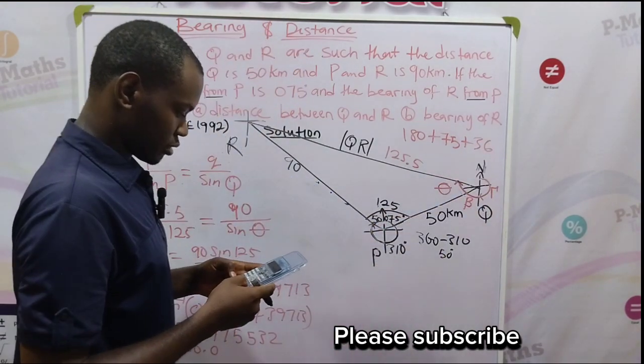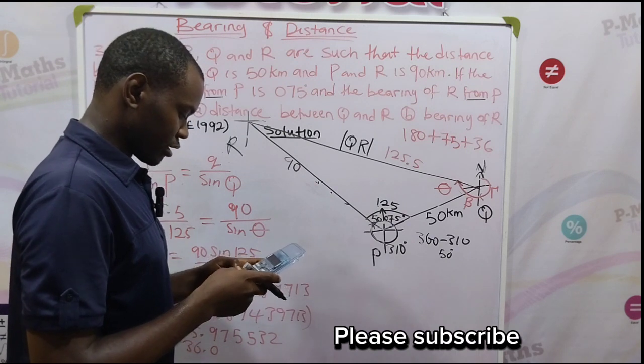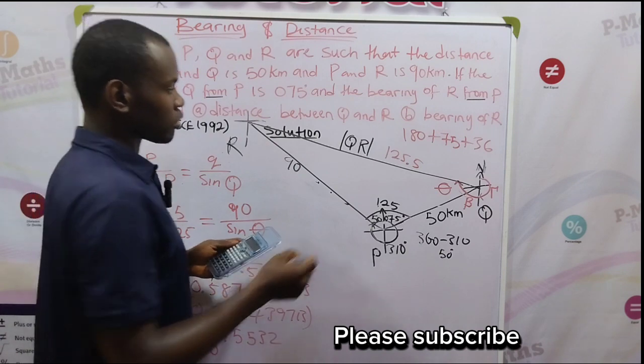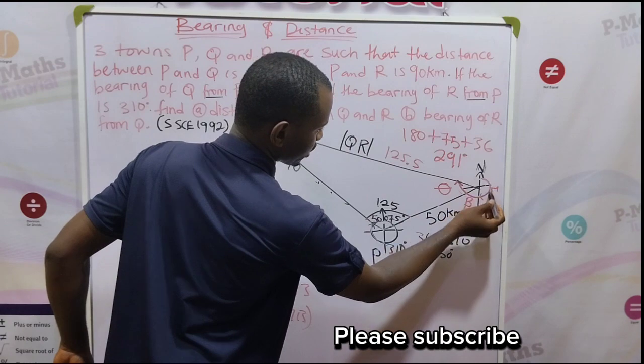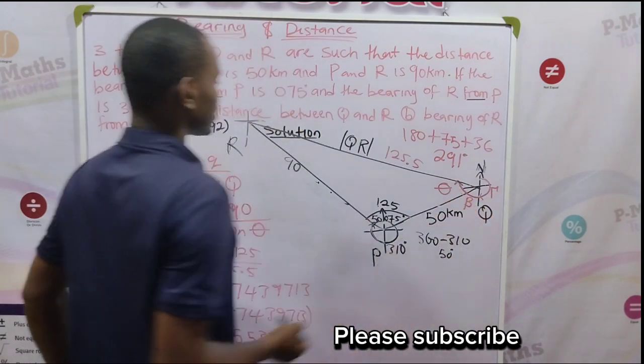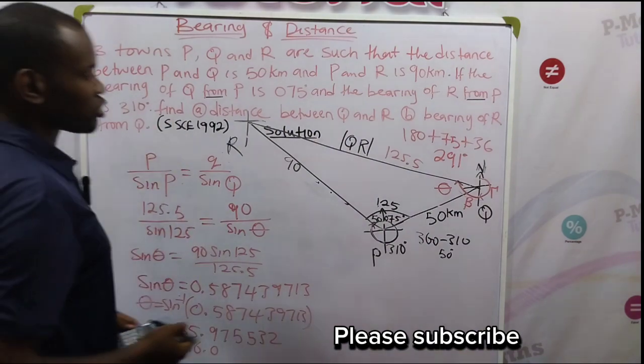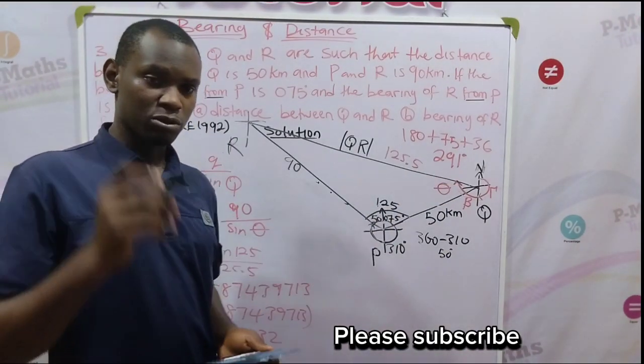So now we have got theta. Let's complete what we are solving here. Add theta to this place, that is 36. So let's add. We have 180 plus 75 plus 36. That will give us 291 degrees. So the total angle from here around to this point is the bearing of R from Q, which is 291 degrees.